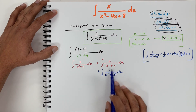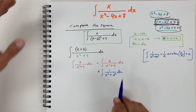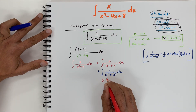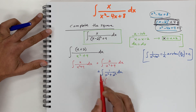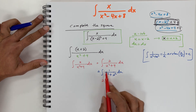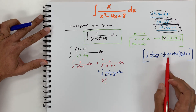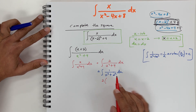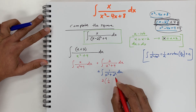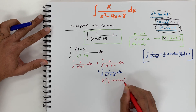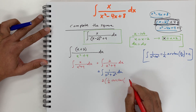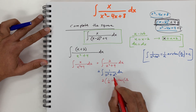For the second integral, we clearly get an arctangent. The answer is 2 on the outside times 1 over a — and a is 2 — so 1 over 2, times arctangent of u over 2.